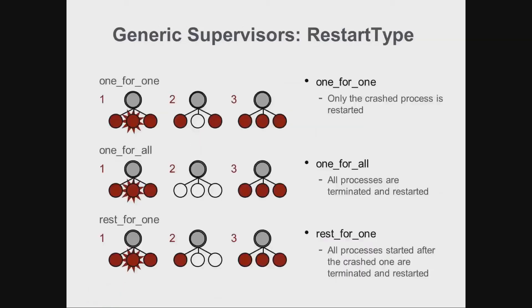The restart tuple contains a restart type, which is one of the following strategies. The one-for-one strategy means that only the crashed process will be restarted. This strategy is ideal if workers don't depend on each other and the termination of one process will not affect all the others.